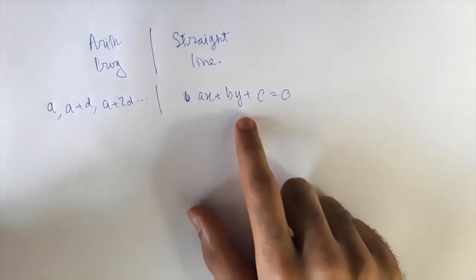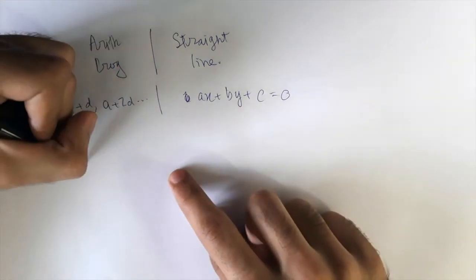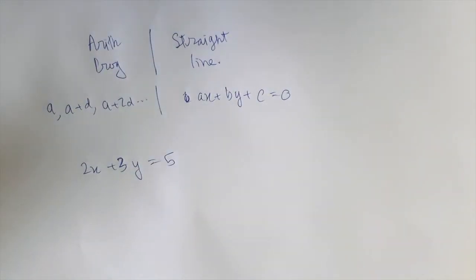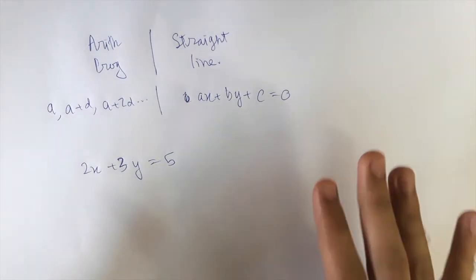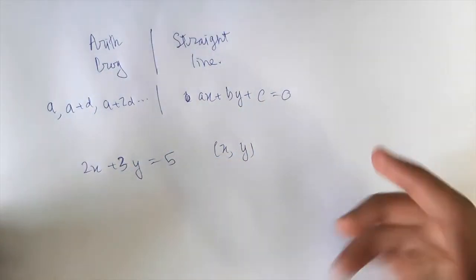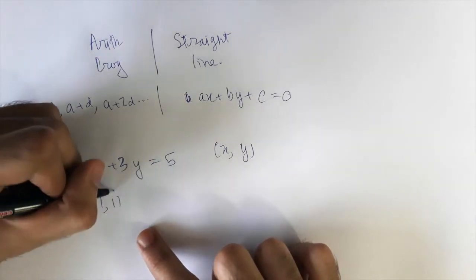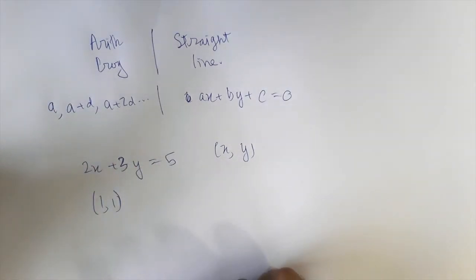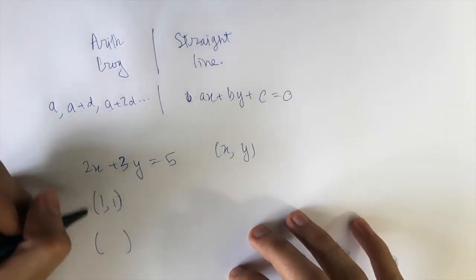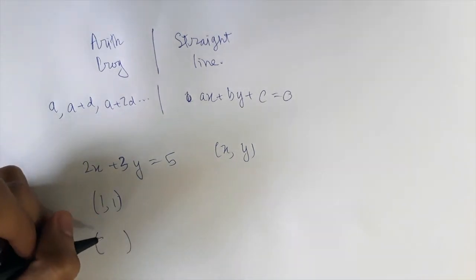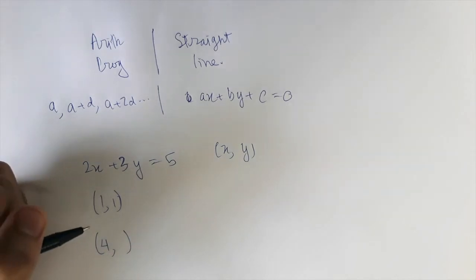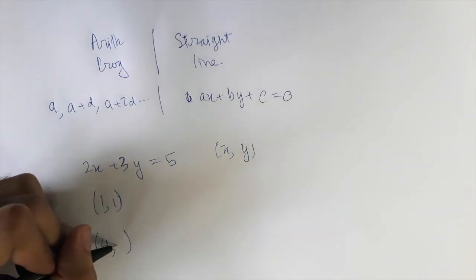Let's take a specific equation: 2x + 3y = 5. We'll talk about all integral solutions today — 'integral' means x and y both are integers. We know (1, 1) satisfies this. Now to generate the next solution, I think it will be (4, -1).